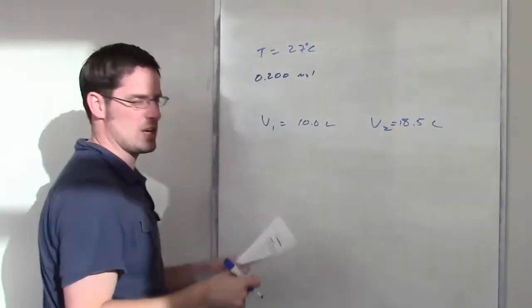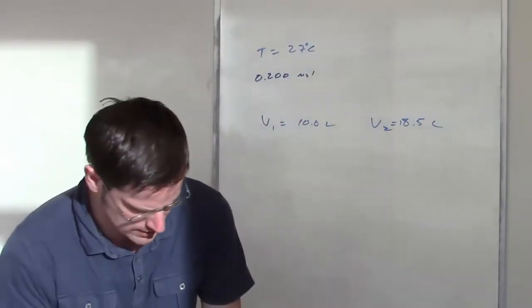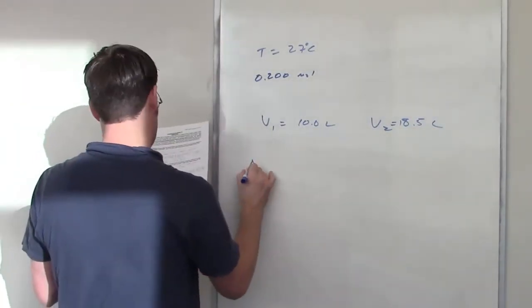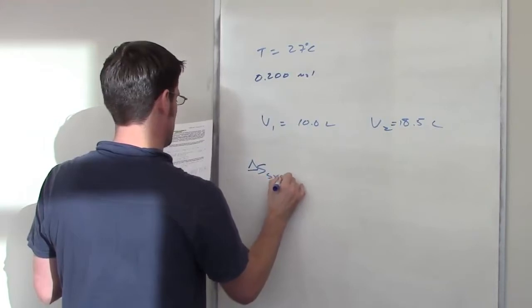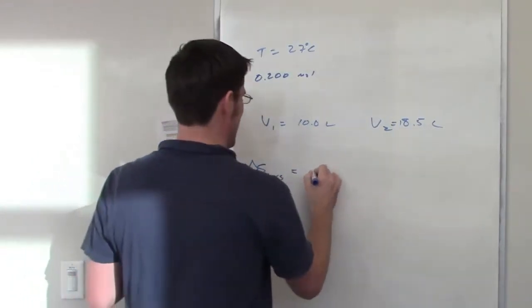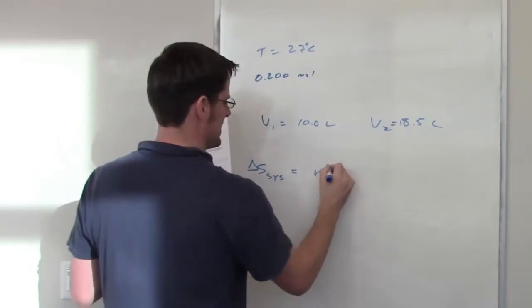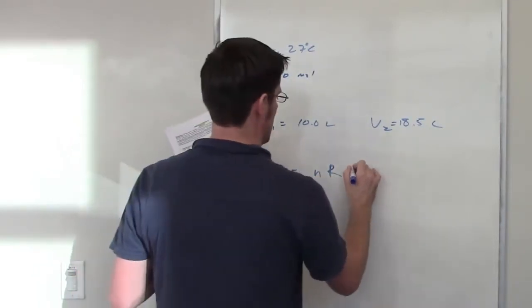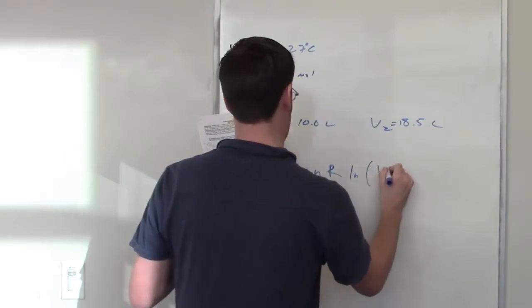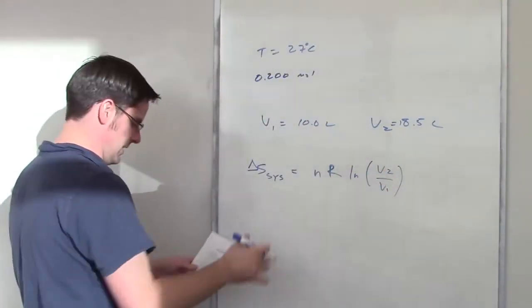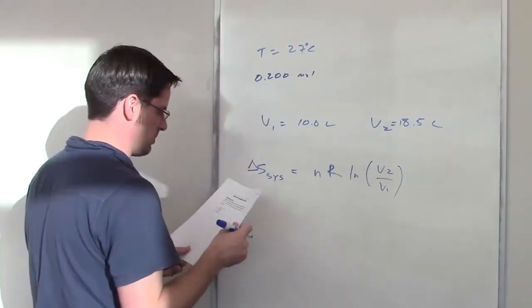It asks what the entropy change is for this process. Now there's an equation I talked to you guys about in the lecture video that says that delta S for a system undergoing this type of change is equal to n which is the number of moles multiplied by R which is the ideal gas constant times ln of V2 over V1. What is the entropy change for this process?